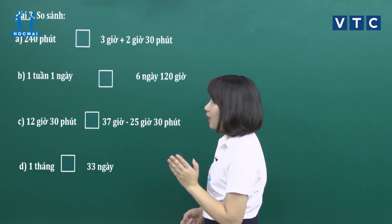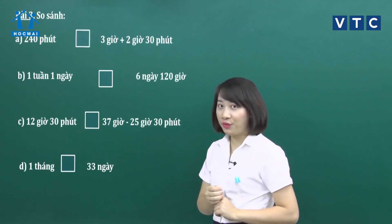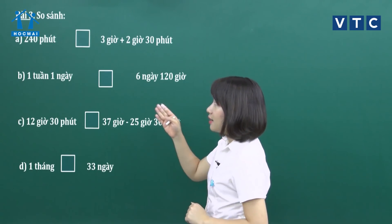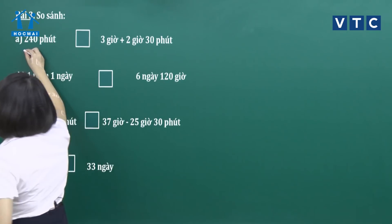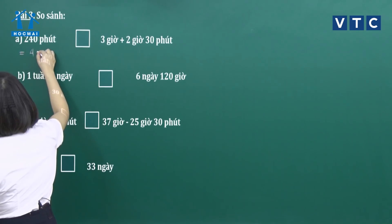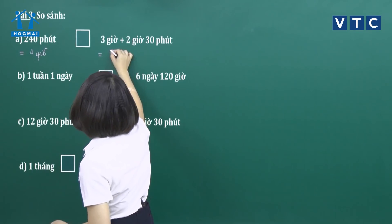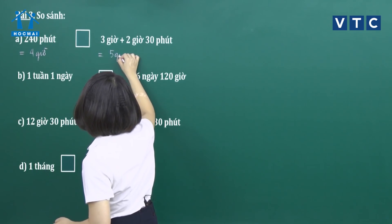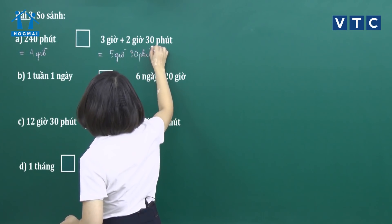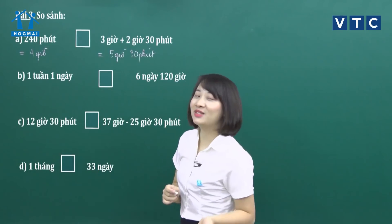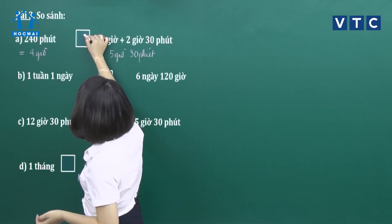Câu A: 240 phút và bên này là 3 giờ cộng 2 giờ 30 phút. 240 phút tương ứng với 4 giờ. Còn 3 giờ cộng 2 giờ 30 phút là 5 giờ 30 phút. Vậy 4 giờ nhỏ hơn 5 giờ 30 phút, điền dấu nhỏ hơn vào ô trống.